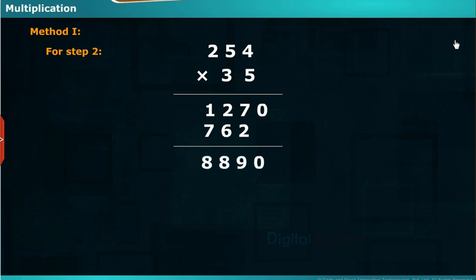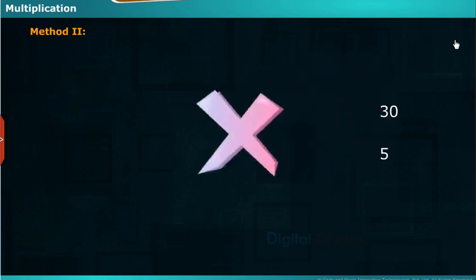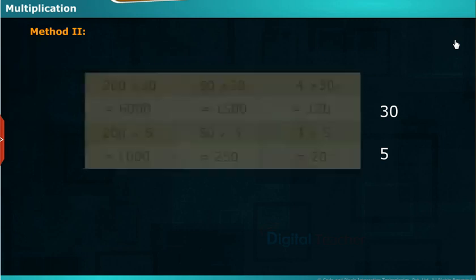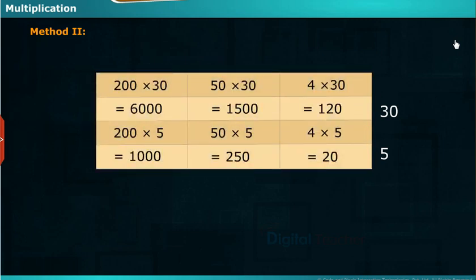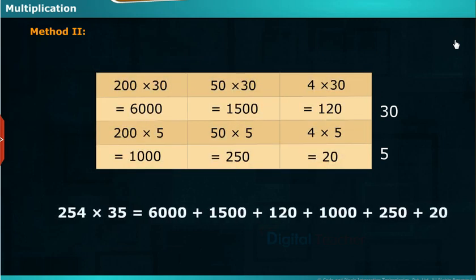Here we are going to see another way of multiplying the numbers. We can split the number according to their place value and can be multiplied by 30 and 5 individually as shown. Now we have to add all the possible results that we have got here.